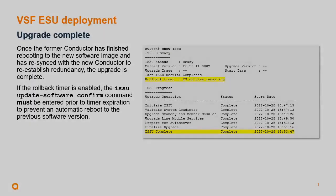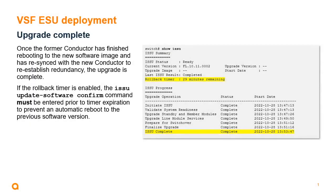Once the former conductor has finished rebooting to the new software image and has re-synced with the new conductor to re-establish redundancy, the upgrade is complete. If you enabled the rollback timer, you must execute the ISSU update software confirm command before the timer expires to prevent an automatic reboot to the previous software version.